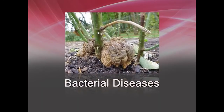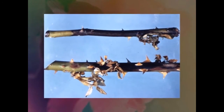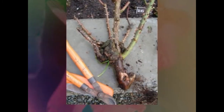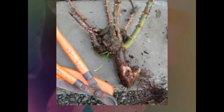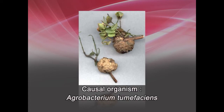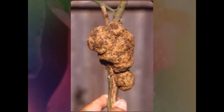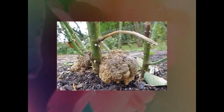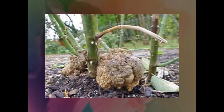Now let's see some bacterial diseases. Bacterial diseases include bacterial leaf spot or blast, crown gall, and hairy root. Crown gall is caused by Agrobacterium tumefaciens. It causes abnormal growths or galls on roots, twigs, and branches. The galls are often found at the base of a plant or just below the soil surface.